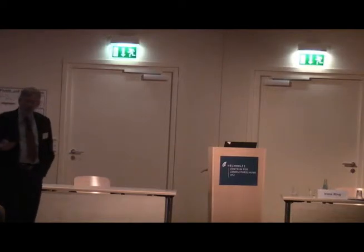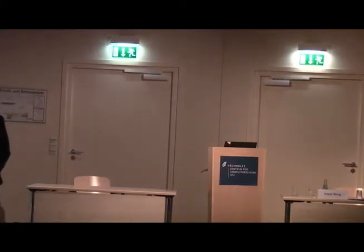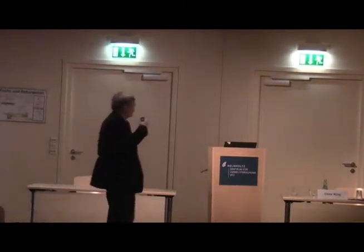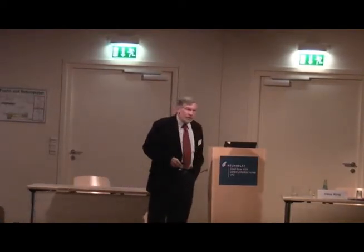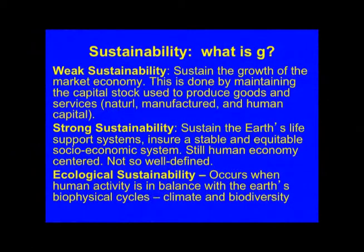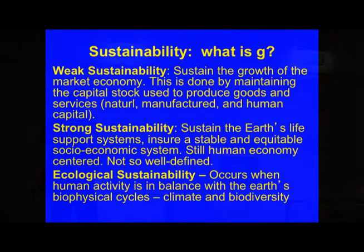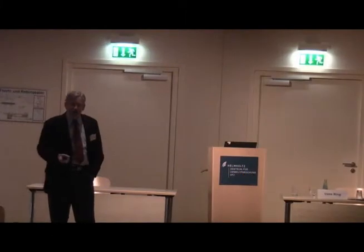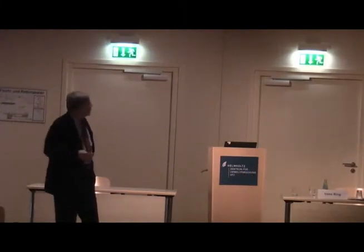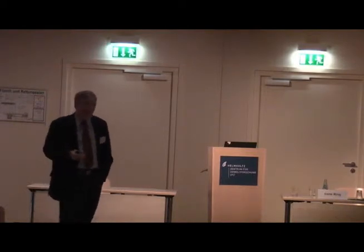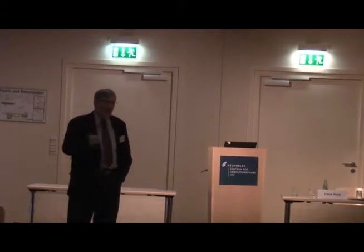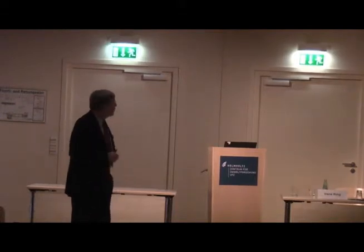So this question — what is G — starts to really get into these different layers of values of biodiversity and different ethical questions. The basic model of weak sustainability is that you sustain the growth rate of the market economy. To do that, you have to sustain the capital base, just like if you live off income from money in the bank, you don't draw down the principal. So you have to sustain the capital stock — natural capital, manufactured capital, and human capital.